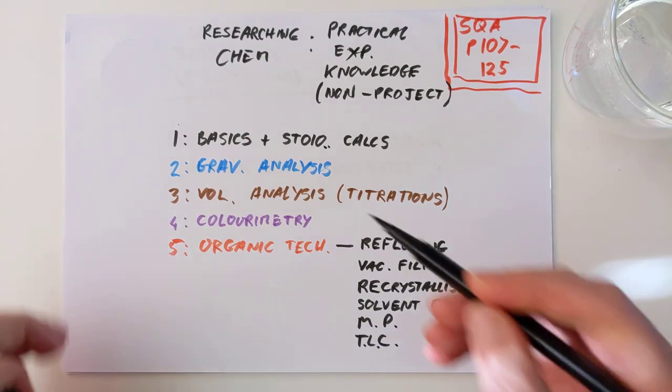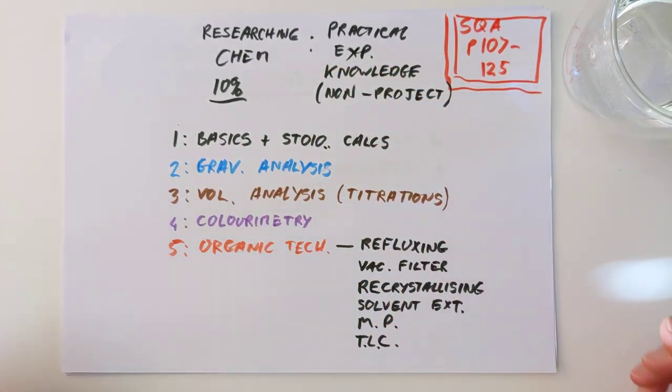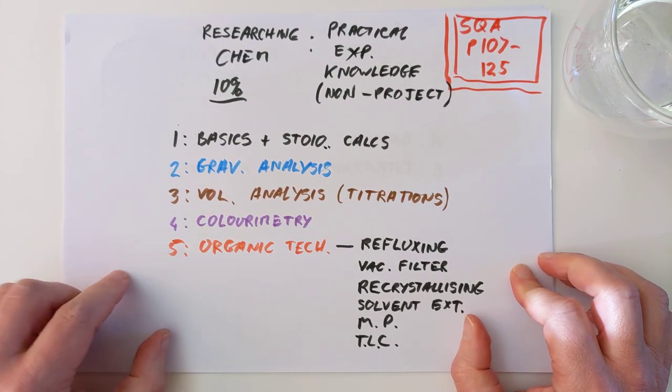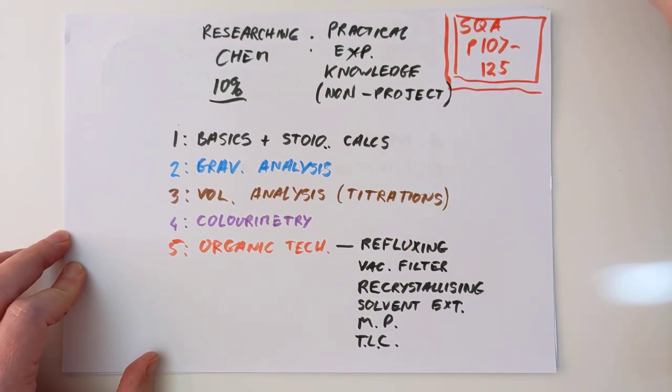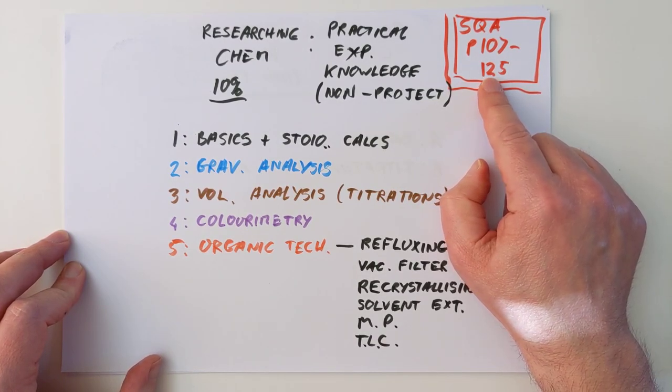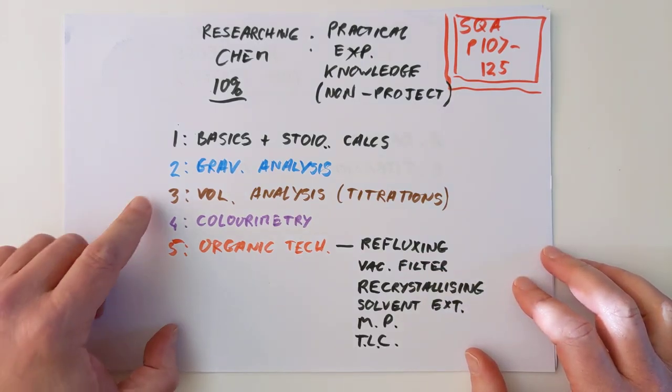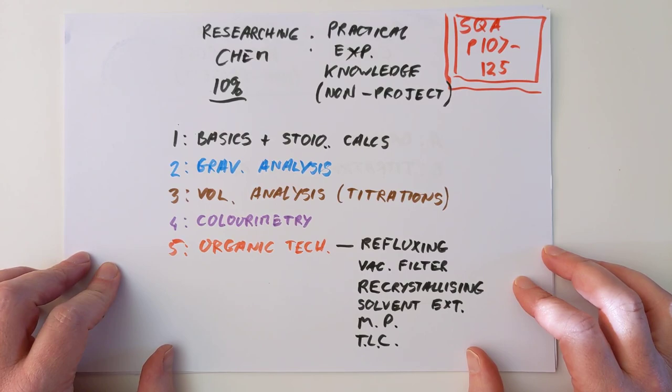It's approximately 10% of your exam mark, which as my son was quite correctly pointing out, is enough to bop you up or down by almost a grade. And it's composed of these five basic areas. I have cheated on this one. It's SQA page 107 through to 125, 18 pages worth. So this video here looks like it's going to be massive, but it's not, because three and two I already have done, which is good news.